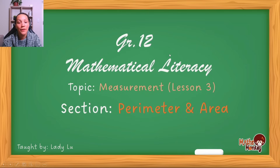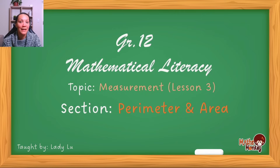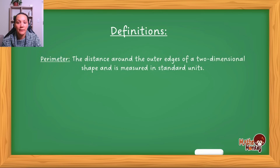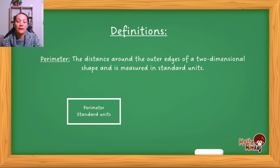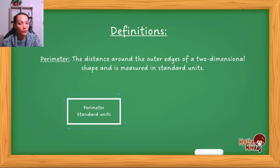This is the third lesson on measurement and we're going to be looking at perimeter and area. I want to start by making sure you understand the definitions. Perimeter is the distance around the outside of a two-dimensional shape and is measured in standard units. Whenever you're doing perimeter, you are working with the outside lengths and you are adding them all together, and that will give you your total perimeter.